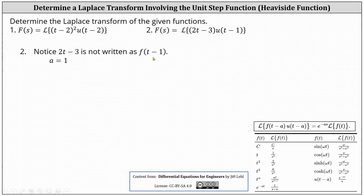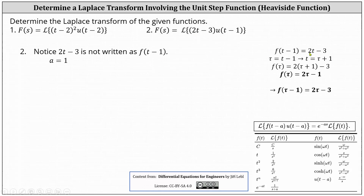We need a function in the form of f of t minus one on the left, and f of t on the right. We know f of the quantity t minus one must equal two t minus three. From here, we introduce a new variable: we let tau equal t minus one, and therefore t equals tau plus one. To determine f of tau, we replace t in f of t minus one with tau plus one, which gives f of tau equal to two times the quantity tau plus one, minus three, which simplifies to two tau minus one.